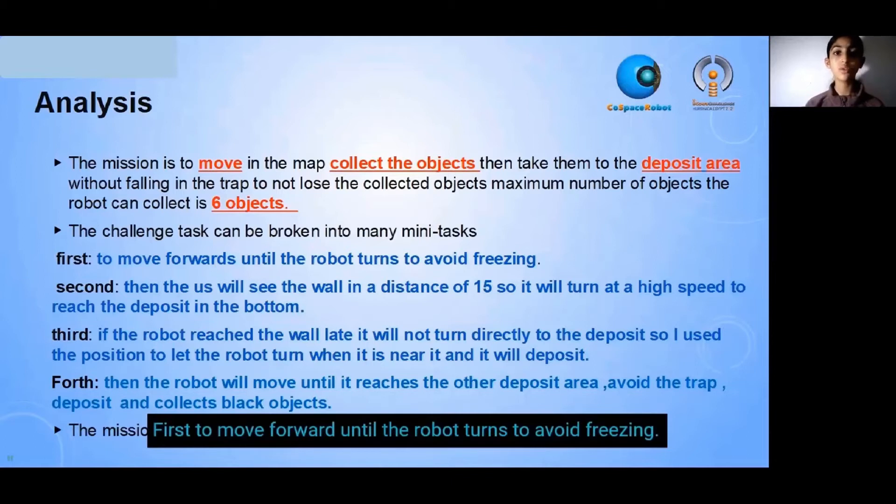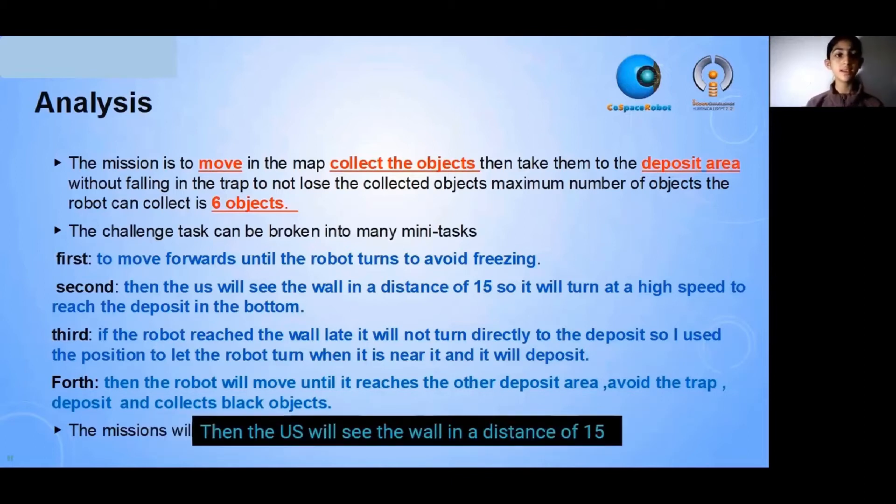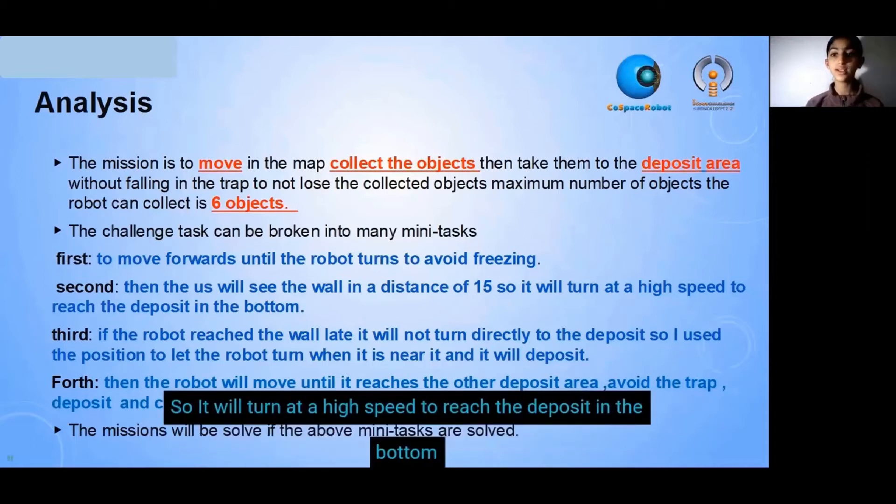First, to move forward until the robot turns to avoid freezing. Then, the US will see the wall in a distance of 15, so it will turn at high speed to reach the deposit in the bottom.